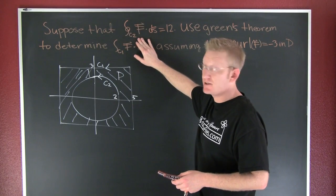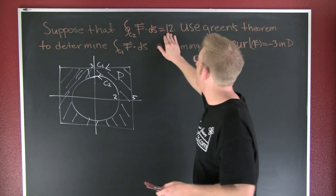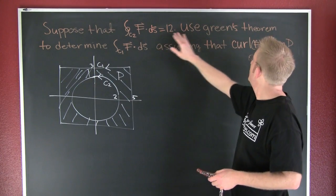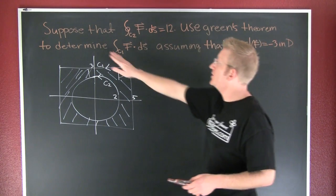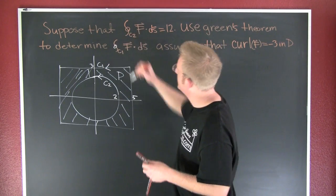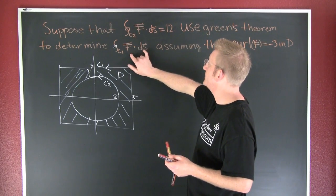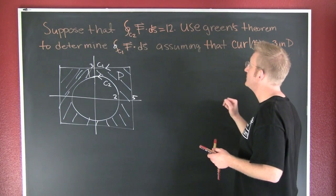And then we want to use Green's Theorem to determine the circulation around C1 of my field dot DS.